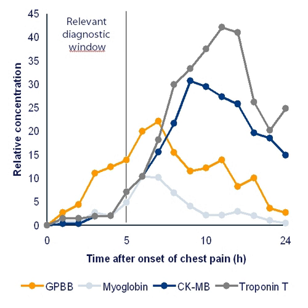In cell biology, a biomarker is a molecule that allows the detection and isolation of a particular cell type — for example, the protein Oct-4 is used as a biomarker to identify embryonic stem cells. In genetics, a biomarker identified as a genetic marker is a DNA sequence that causes disease or is associated with susceptibility to disease. They can be used to create genetic maps of whatever organism is being studied.